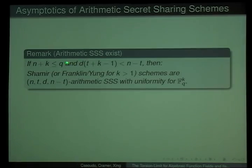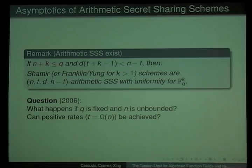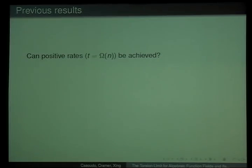The constraints are these two. This one is to be able to construct the scheme and this is to have the arithmetic properties. But if we look at the first constraint, we see that the number of shares has to be bounded by the size of the field. So the question that we wonder is what happens if this field is fixed, but we want to have an arbitrarily large number of players. Can we get positive rates of t? Can we get t linear in n?